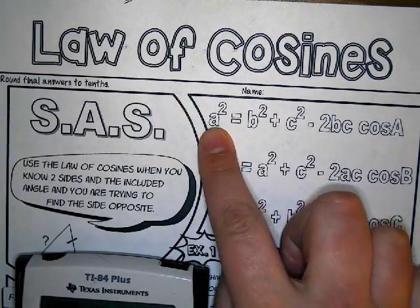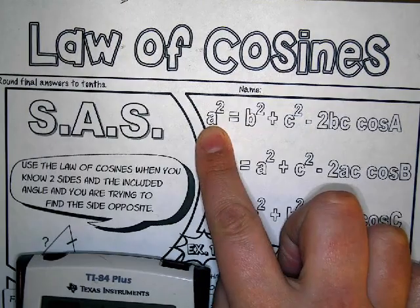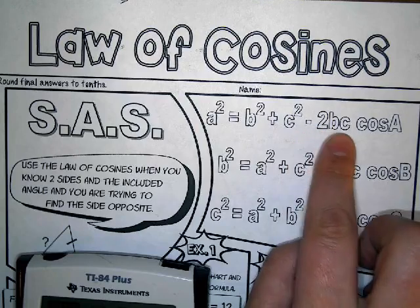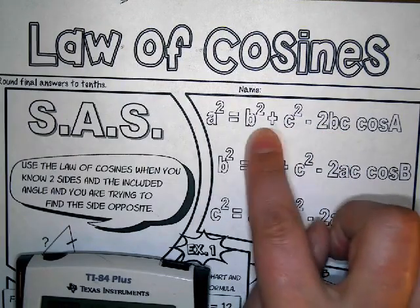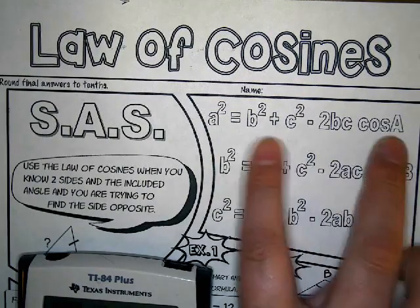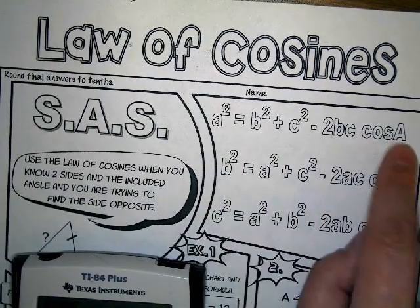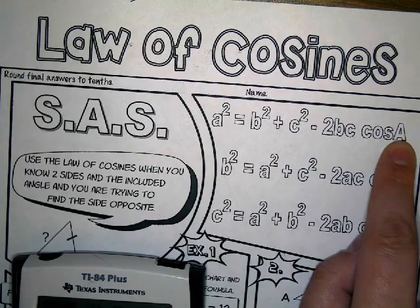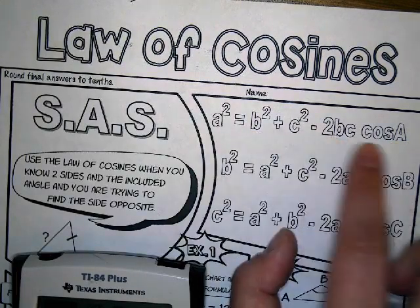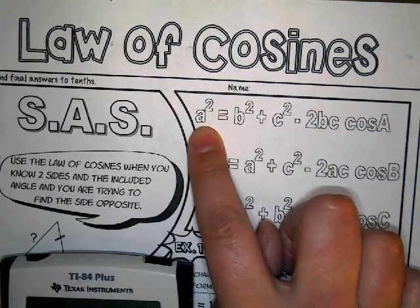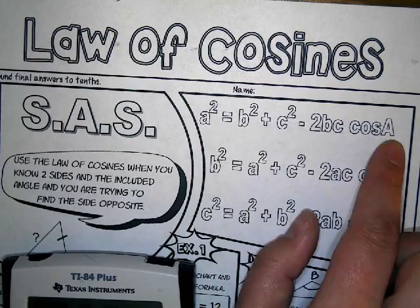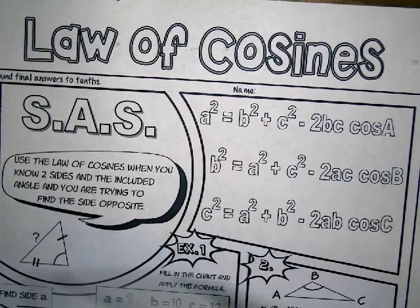It should be the side that you're looking for squared equals the other two sides squared added together, minus — and then you can see that these two sides are the same. So whatever sides you were given, and then the angle. You'll notice that this side and this angle match up. So with side-angle-side, you would be given all of this information and this would be the piece that you're solving for. You'd be able to plug everything in and it's pretty straightforward.